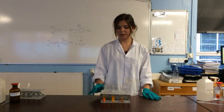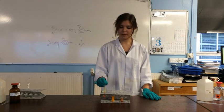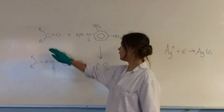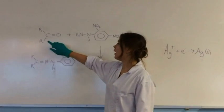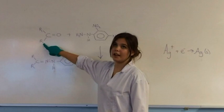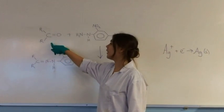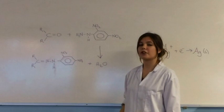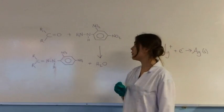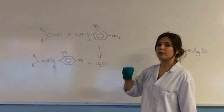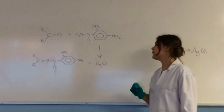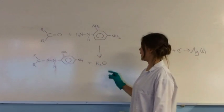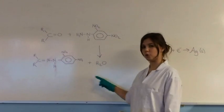In case you're wondering about the formation of the precipitate, this is what's going on. Here we have our carbonyl compound. If this is a hydrogen then it's going to be an aldehyde and if it's a hydrocarbon group then it's going to be a ketone. Here is our 2,4-dinitrophenylhydrazine and they're reacting together in a condensation reaction so water is being formed.